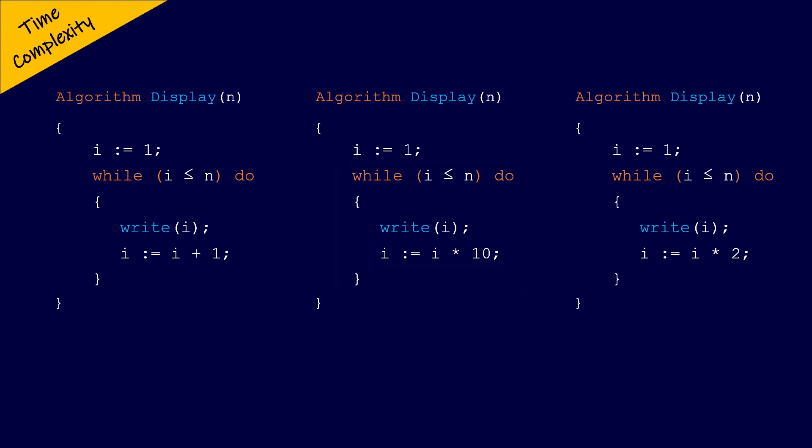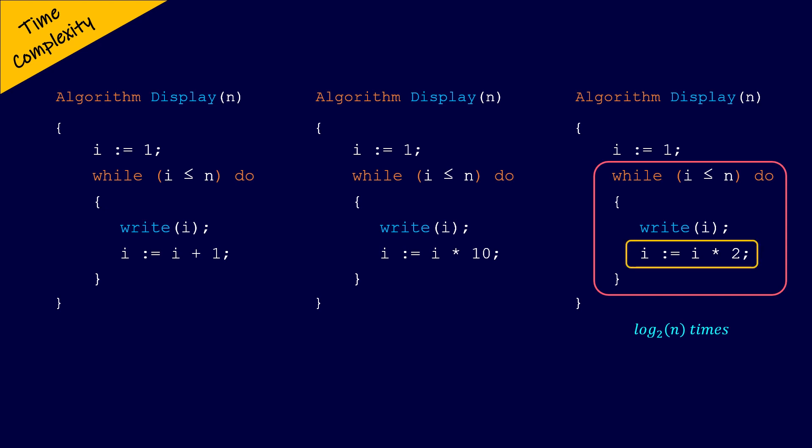And the statements within the while loop of the third algorithm execute log n to base 2 times, because the variable i is multiplied by 2 each time the loop is executed, and the condition is true for i less than or equal to n.